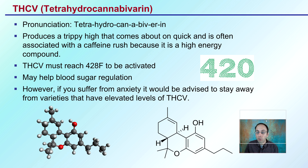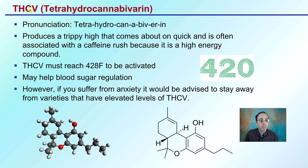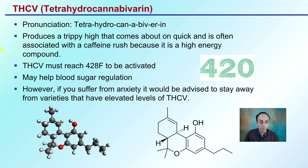In addition, we have THCV, tetrahydrocannabivarin, which produces a trippy high that comes on quickly and is often associated with a caffeine rush because of its high-energy compound. However, THCV must reach 428 degrees Fahrenheit in order to be activated. It may help with blood sugar regulation as well. However, if you suffer from anxiety, it would be advised to stay away from varieties that have elevated levels of THCV.